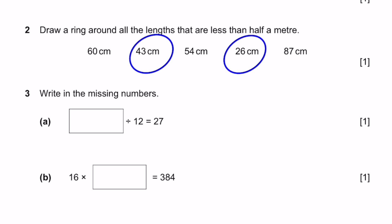Question 3. Write in the missing numbers. Blank divided by 12 equals 27. Bring this 12 to the other side. 27 times 12 equals 324. That's the answer. And now for B, 16 times blank is 384. Bring 16 to the other side. 384 by 16. And when we do that, we get the answer 24.